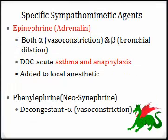Epinephrine has both alpha and beta effects — it can cause vasoconstriction and bronchodilation. It's the drug of choice for an acute asthmatic attack or anaphylaxis because it aids in bronchodilation, allowing the person to breathe. It's also added to local anesthetic cartridges because it vasoconstricts the blood vessels around the injection site, preventing the body from clearing away the local anesthetic as quickly and keeping the patient numb longer.